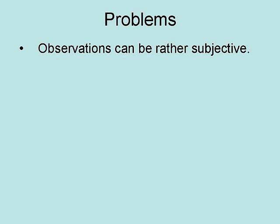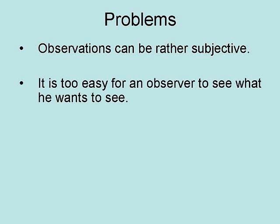For example, sometimes observations can be rather subjective. It is too easy for an observer to see what he wants to see — that is, the observer is looking for what he wants to see, and patterns resembling what the observer wants to see are more likely to be noticed.